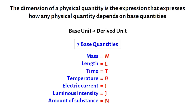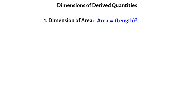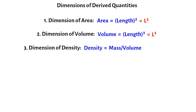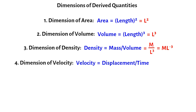We have already known the dimensions of the seven base quantities. Now let's find the dimensions of other derived quantities. Dimension of area: area is equal to length squared, so the dimension of area is L². Dimension of volume: volume is equal to length cubed, so the dimension of volume is L³. Dimension of density: density is equal to mass divided by volume, so the dimension of density is M/L³ or ML⁻³. Dimension of velocity: velocity is equal to displacement divided by time, so the dimension of velocity is L/T or LT⁻¹.